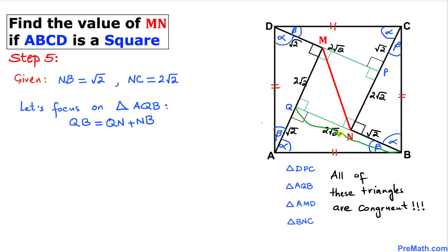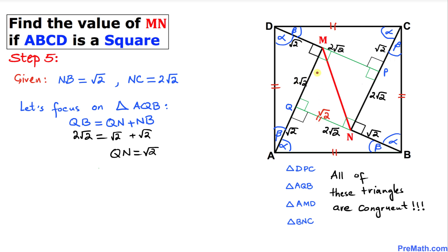Focusing on triangle AQB: side QB = 2√2 and side NB = √2, so side QN = 2√2 − √2 = √2. By repeating the same process for all sides, we conclude that each of these remaining sides is also √2.